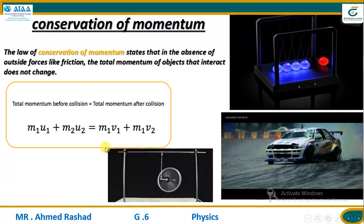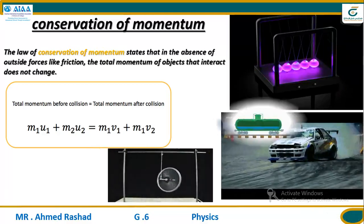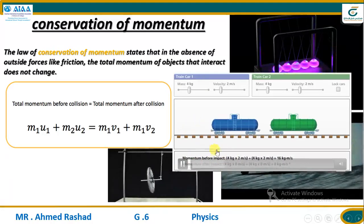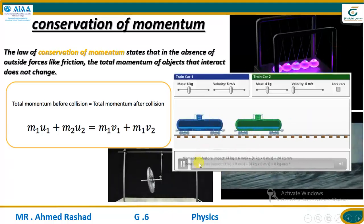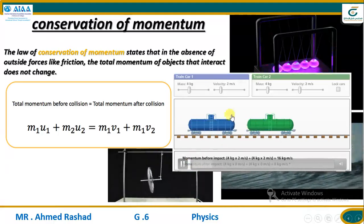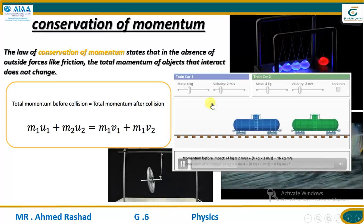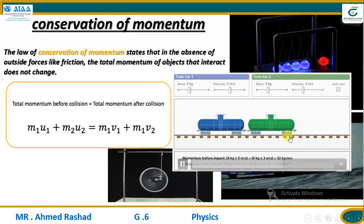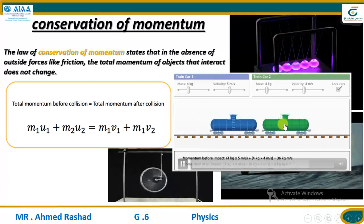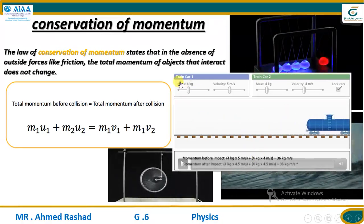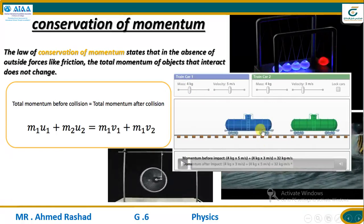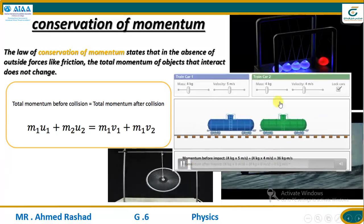Watch this video. This video describes the amount of momentum. When a train car moves alone, it has its own momentum. But when train car 1 suddenly crashes into train car 2, it transfers its momentum. Train car 2 gains momentum while train car 1 loses momentum. When they collect together, they move with the same combined momentum.